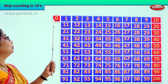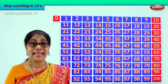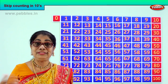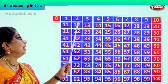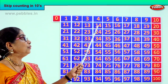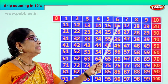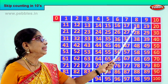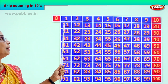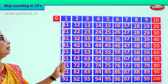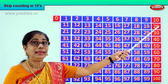So we jump from zero to ten — ten. After ten: eleven, twelve, thirteen, fourteen, fifteen, sixteen, seventeen, eighteen, nineteen, twenty. So we jump from here to twenty.